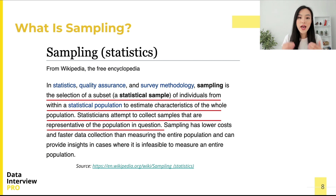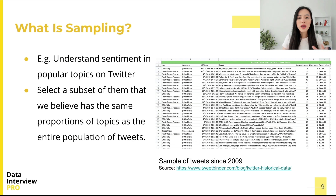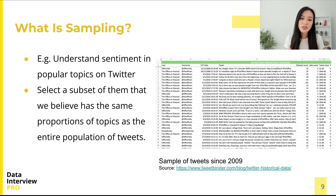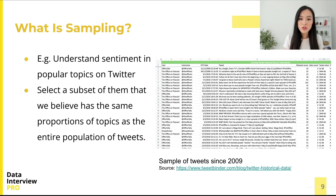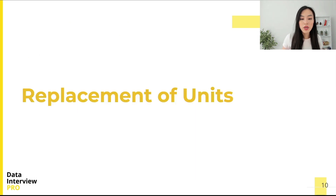Going back to our tweets example: instead of looking at all of the tweets, we will try to select a subset of them that we believe has the same proportions of topics as the entire population of tweets. That way we should be able to use statistical inference methods to infer the properties of the whole population of tweets. Now we know what sampling is and why it is important in practice.